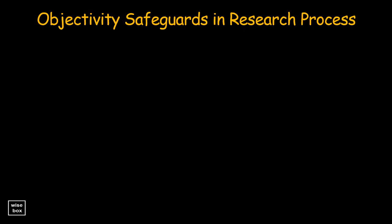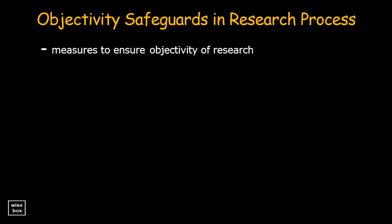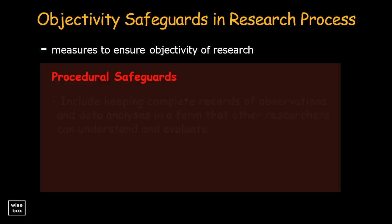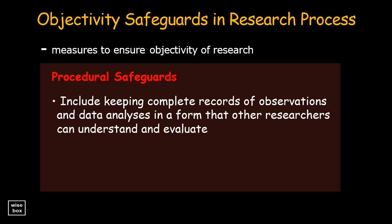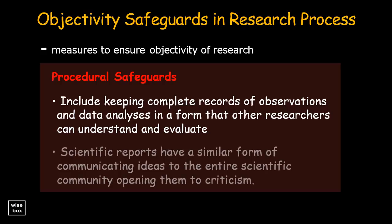Objectivity safeguards in the research process are measures that must be practiced by researchers to ensure objectivity of the research process and its outcome. Procedural safeguards include keeping complete records of observations and data analyses in a form that other researchers can understand and evaluate. Scientific reports have a similar form of communicating ideas to the entire scientific community, opening them to criticism.